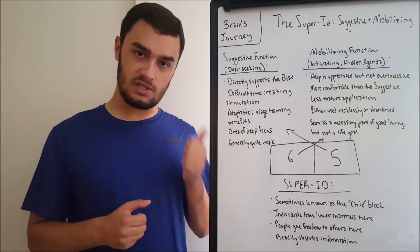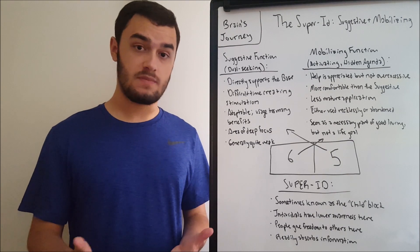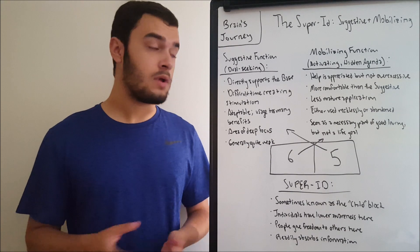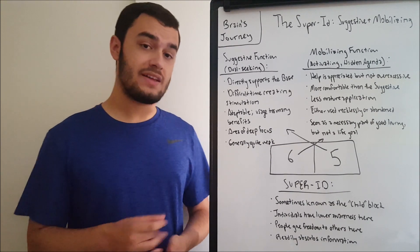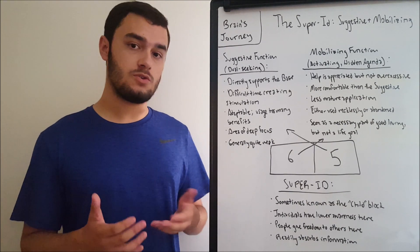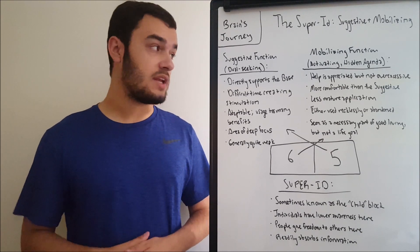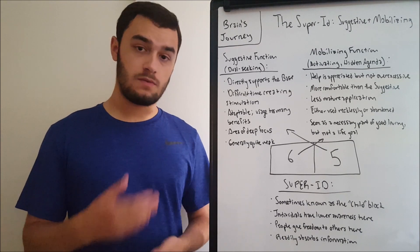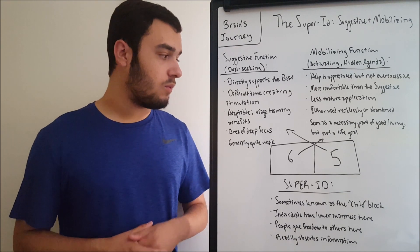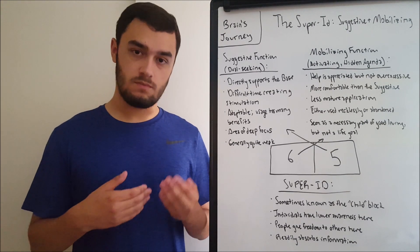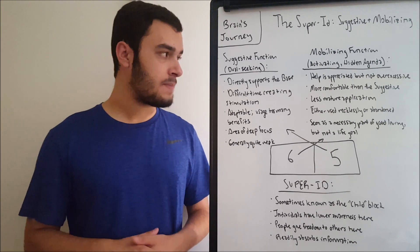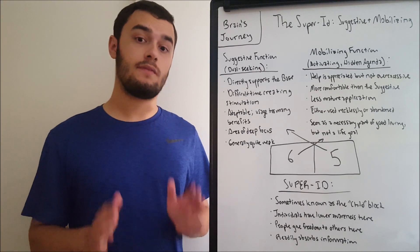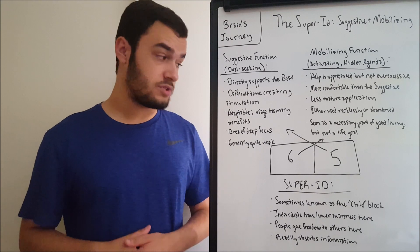We have a difficult time creating stimulation here. We desperately want something to go well here, but we generally have a hard time making that happen on our own. So one crucial aspect of the suggestive function is that we appreciate others who are able to come into our lives and improve this aspect for us. Others that will give us guidance, do things for us, help regulate this aspect, will help us achieve goals in our life. Whereas we would have a difficult time, we would have to put a lot of effort and concentration into doing something like that on our own time.